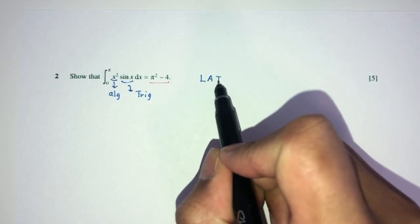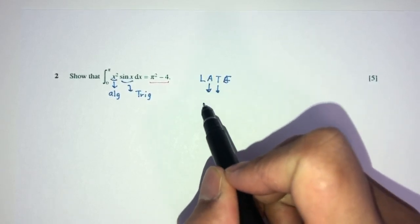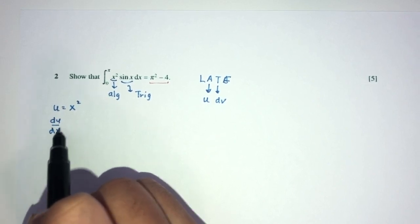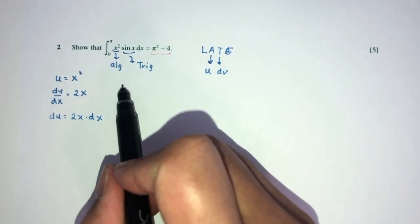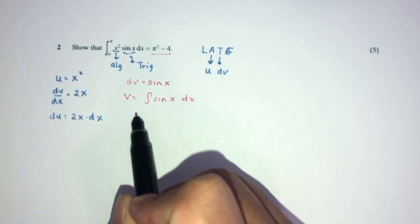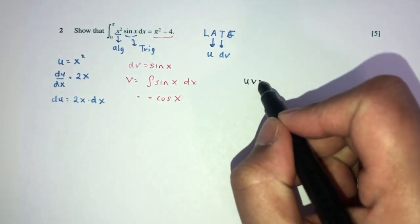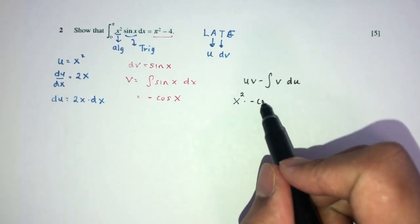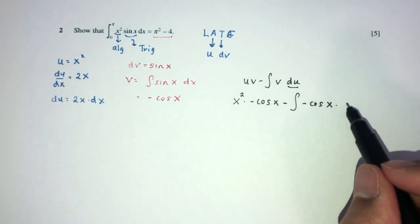So here we can use integration by parts to solve this integral. I'll use the LIATE rule. Here we have algebra and trig — A comes first, so we call this one u and this one dv. So u will be x squared. Therefore du/dx will be 2x, hence du is 2x dx. Now for v: dv is sine x, so to find v we integrate sine x. That gives minus cos x.